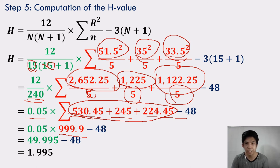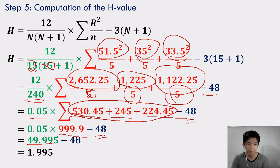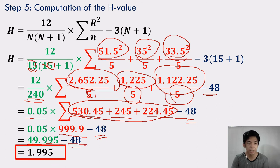Now the blue part: 3 × (15 + 1) = 3 × 16 = 48. So: 0.05 × 999.9 = 49.995, minus 48, gives us the H value of 1.995.